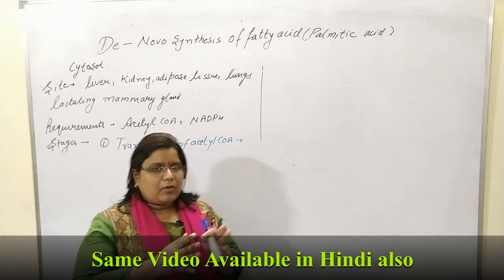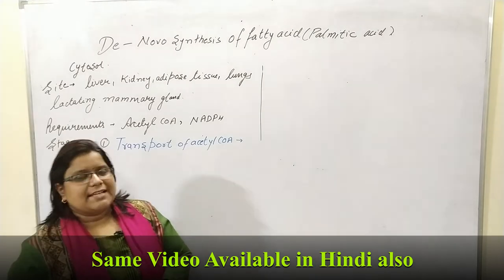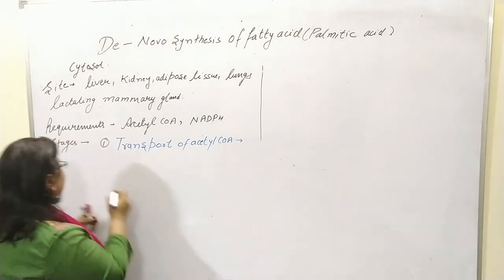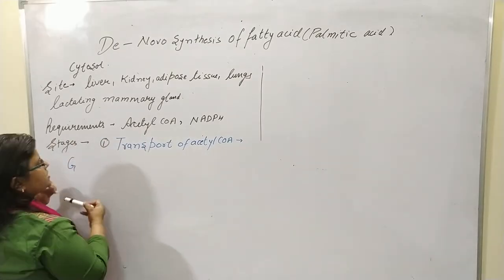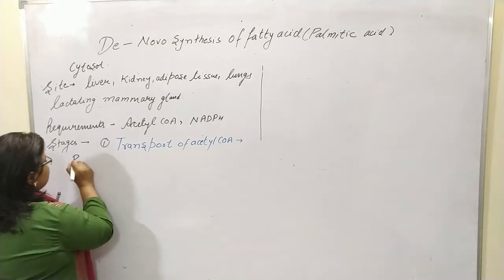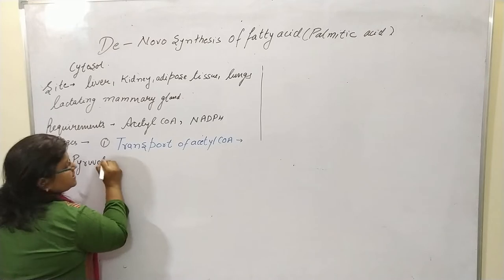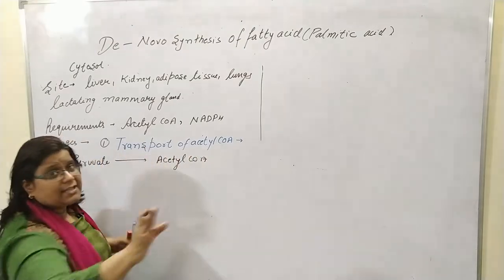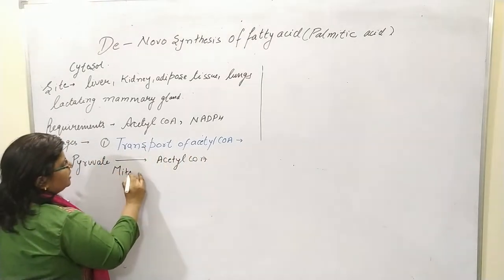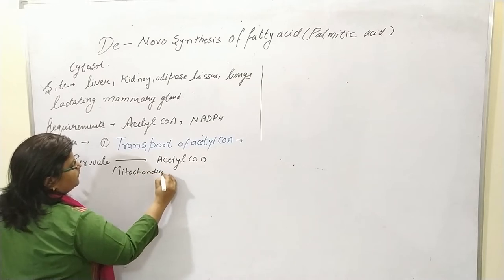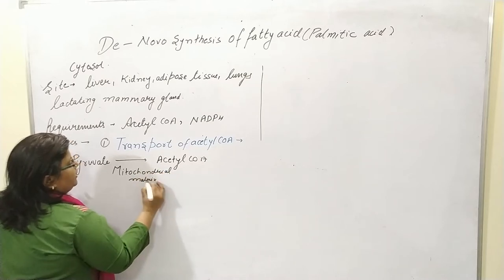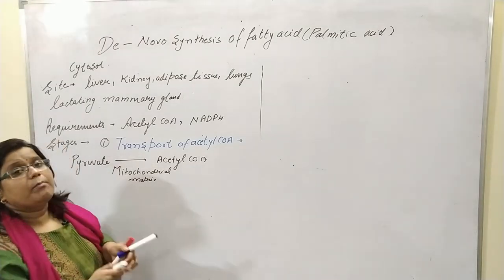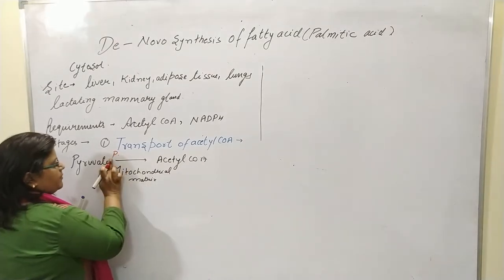There are three stages in fatty acid synthesis. In the first stage, the transport of acetyl coenzyme A: in glycolysis, glucose is converted into pyruvate. This pyruvate is then converted into acetyl coenzyme A — not in the cytosol, but in the mitochondrial matrix — with the help of pyruvate dehydrogenase.